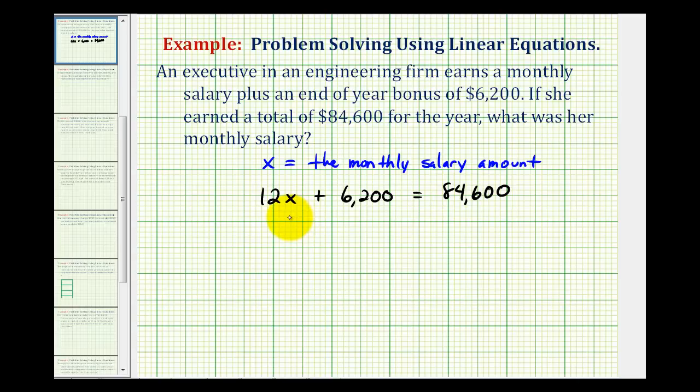So now if we solve this equation for x, we'll know her monthly salary. This is a basic two-step equation, so the first step is to undo this addition. The opposite of plus $6,200 would be minus $6,200. So subtract $6,200 on both sides.